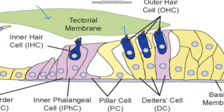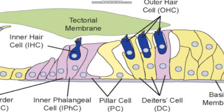Looking once more at the hair cells: the tectorial membrane is a gel-like gelatinous membrane into which the hair cells are embedded. There are inner and outer rows of hair cells on the basilar membrane. The basilar membrane moves up and down — this movement mechanically activates the hair cells. Once activated, action potentials are produced in the nerves and conducted through the vestibulocochlear nerve.